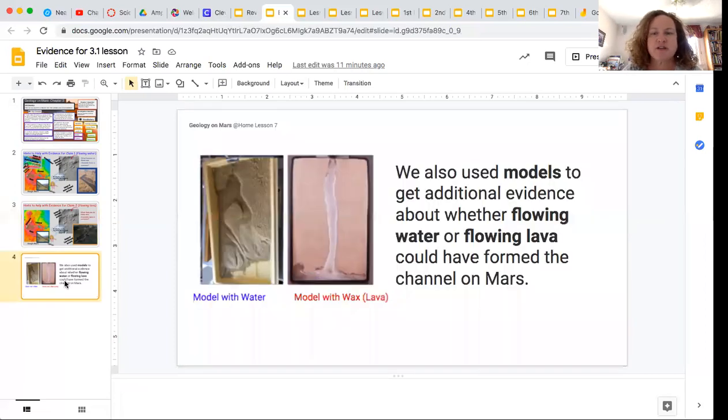And then this is just a picture of us, the models that we use to get additional evidence about whether flowing water or flowing lava could have formed the channel on Mars. So here is our stream table that we did. And here is the model with the wax.